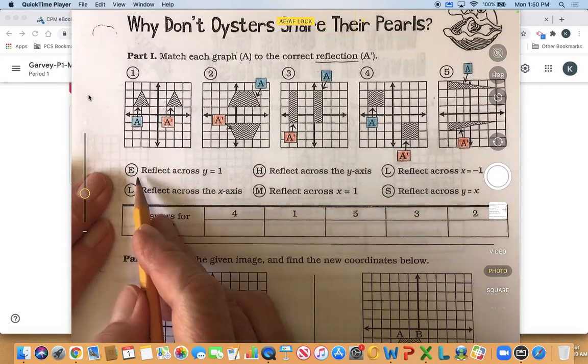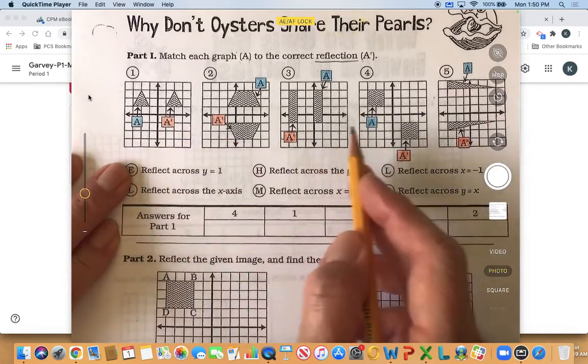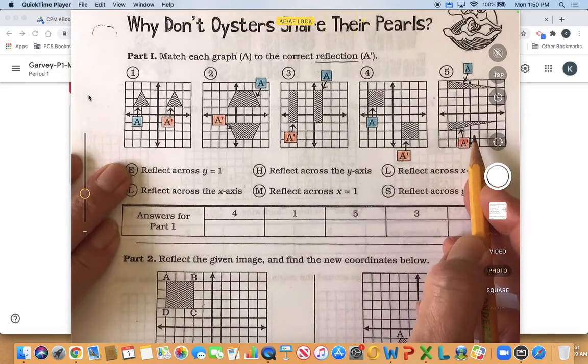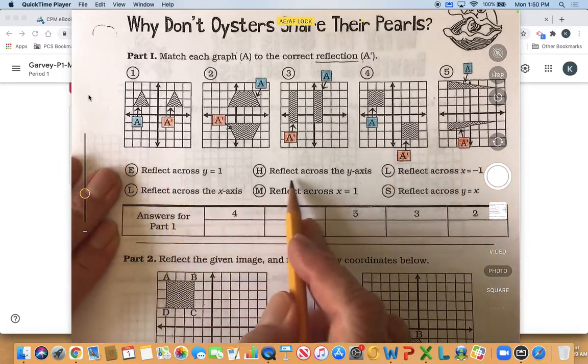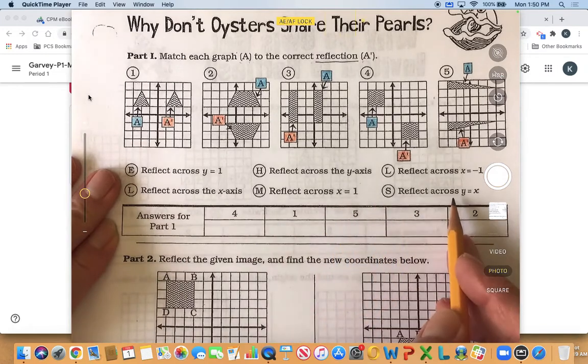And then so we have one two three four five graphs here and then right here we have six possible answers.